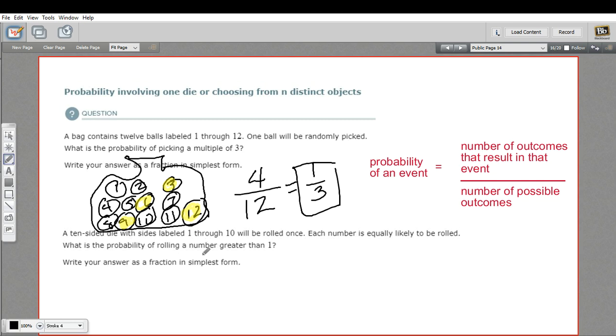Let's try another one. This one uses dice. It says a 10-sided die with sides labeled 1 through 10 will be rolled once. Each number is equally likely to be rolled. So this is a fair 10-sided die. What's the probability of rolling a number greater than 1? Well, let's think about this.